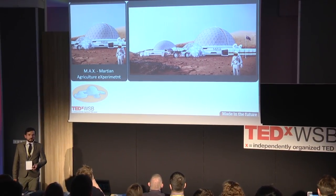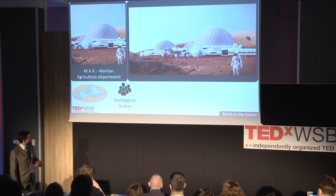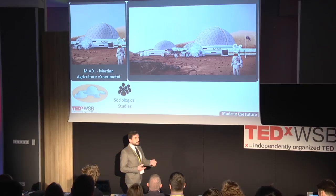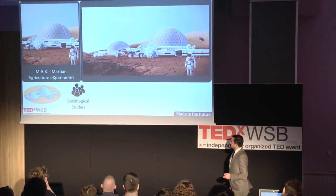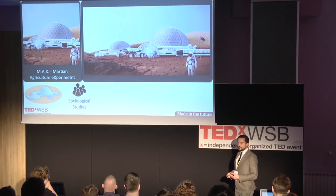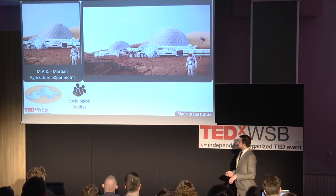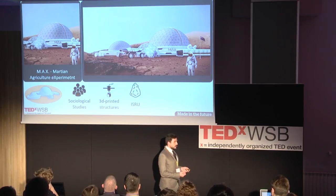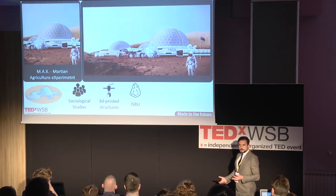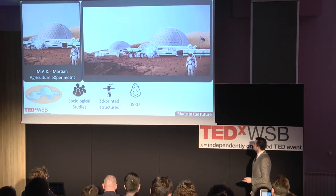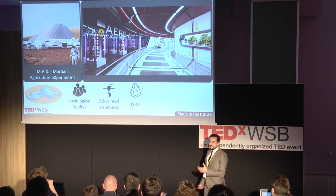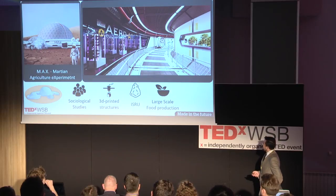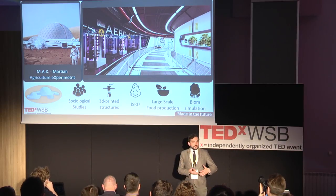This is the first time someone will try to build an analog of a colony, allowing us to conduct sociological studies with a group of around 16 to 20 people. In that case, you don't want to bring all your architecture from Earth — you'd like to develop it on site. All the structure will probably be 3D printed using local resources, which is called in-situ resources utilization. Inside, we will conduct large-scale food production studies, and under the dome we would like to create a simulation of a biome to make the habitat more Earth-like.